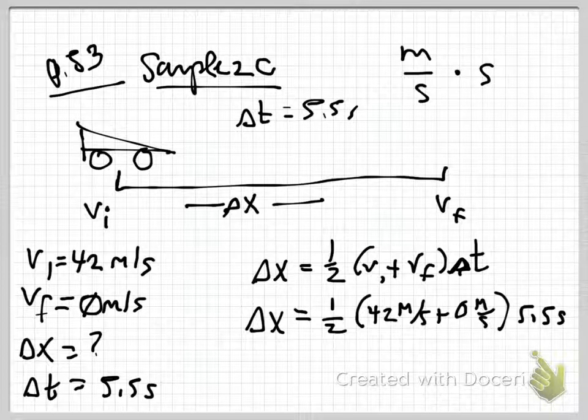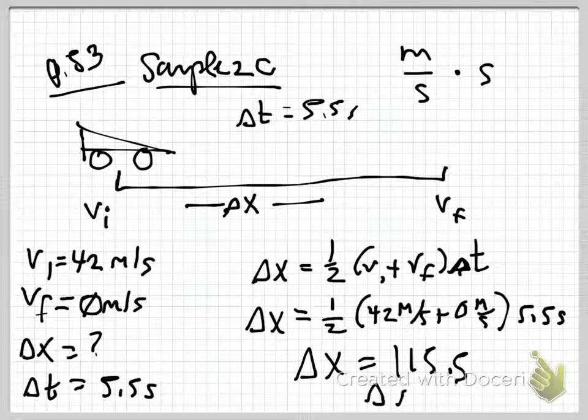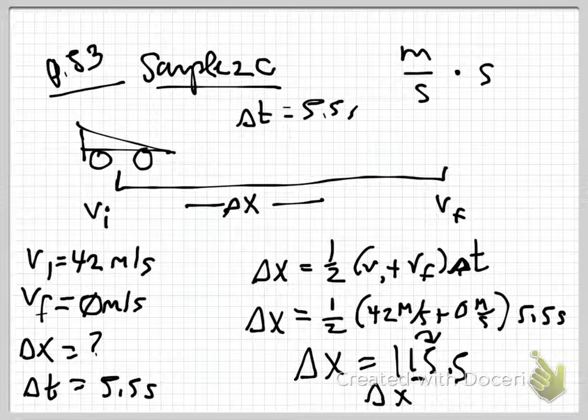So, then, we want to write the equation in its basic form. We have delta x equals 1 half vi plus vf times delta t. We don't even have to rearrange this. There's no algebra necessary at this point. So, this is just plug and play. Delta x equals 1 half 42 meters per second plus 0 meters per second times 5.5 seconds. Let's do some quick dimensional analysis.